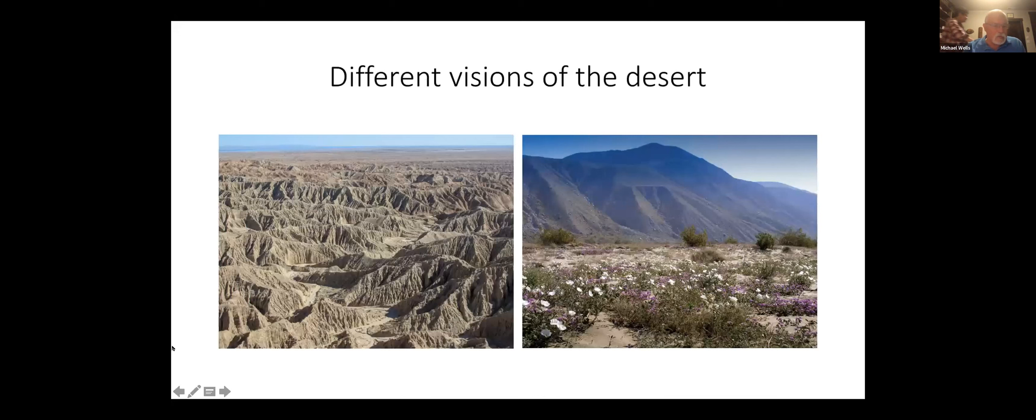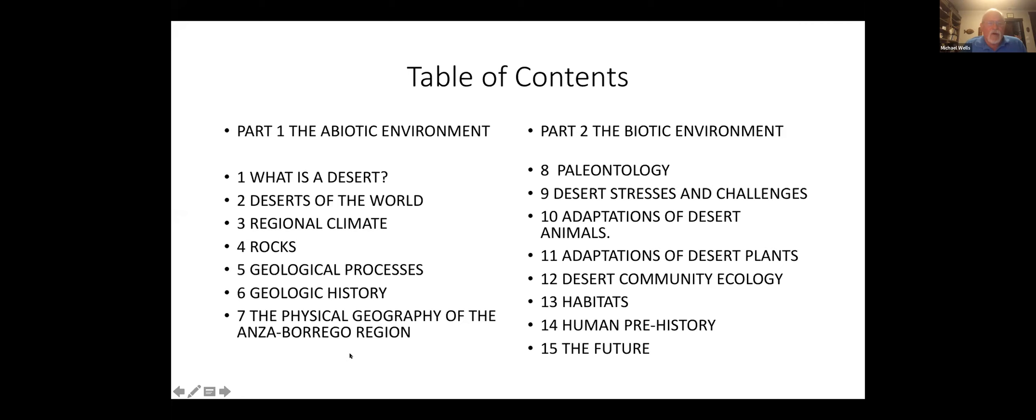This is the table of contents. Just to give you an idea of what's in the book, it's divided into two parts. The first part is about the physical environment, the geology, climate, weather, and geography of the area. Then the second part is the biological environment.